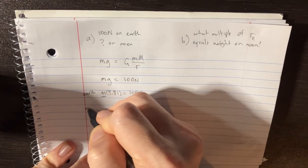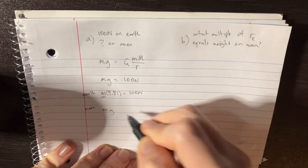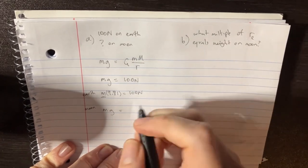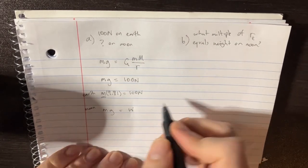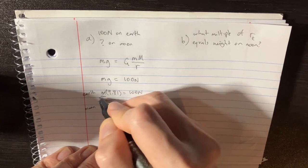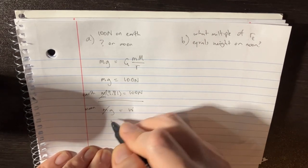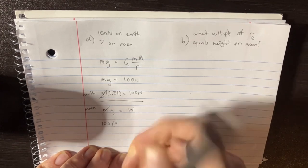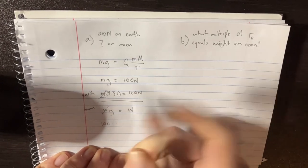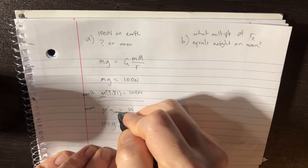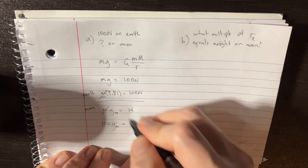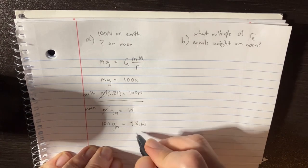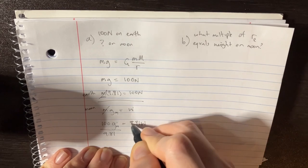and we want to know if we were on the moon, and we were doing mg, what would that be? What would w be? Well, let's try to divide these two equations by each other. Get rid of the m's, and then we can do the cross multiplying. 100 times the g, and this is g of the moon by the way, is equal to 9.81 of the weight.